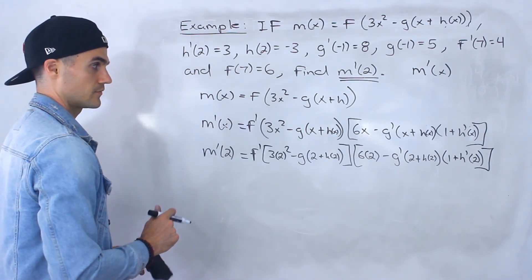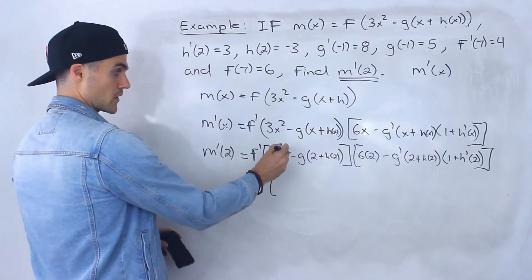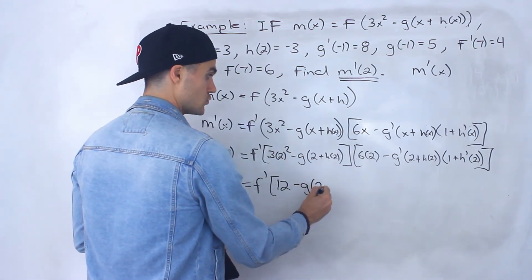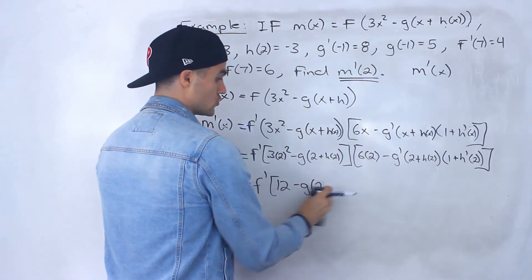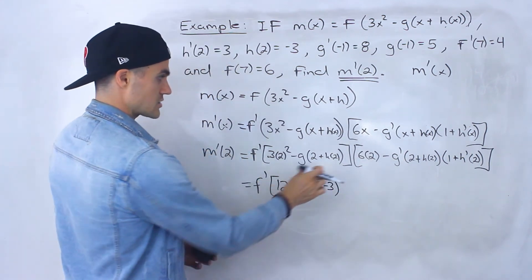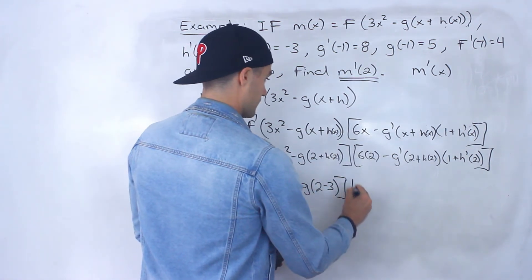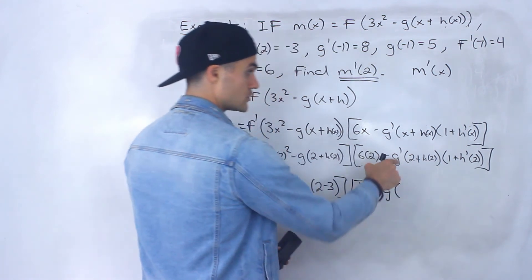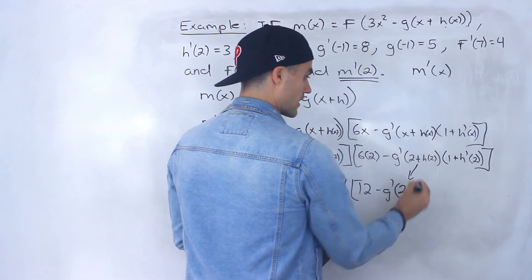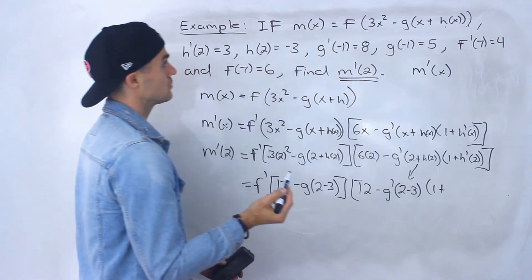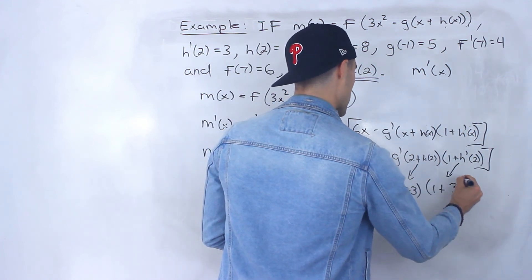Let's simplify. 2 squared is 4, times 3 is 12. h of 2 is given as negative 3, so the inner bracket (2 plus h of 2) becomes 2 plus negative 3, which is negative 1. For the square bracket: 6 times 2 is 12. The bracket (2 plus h of 2) is again negative 1. h prime of 2 is given as 3, so (1 plus h prime of 2) becomes 1 plus 3, which is 4.